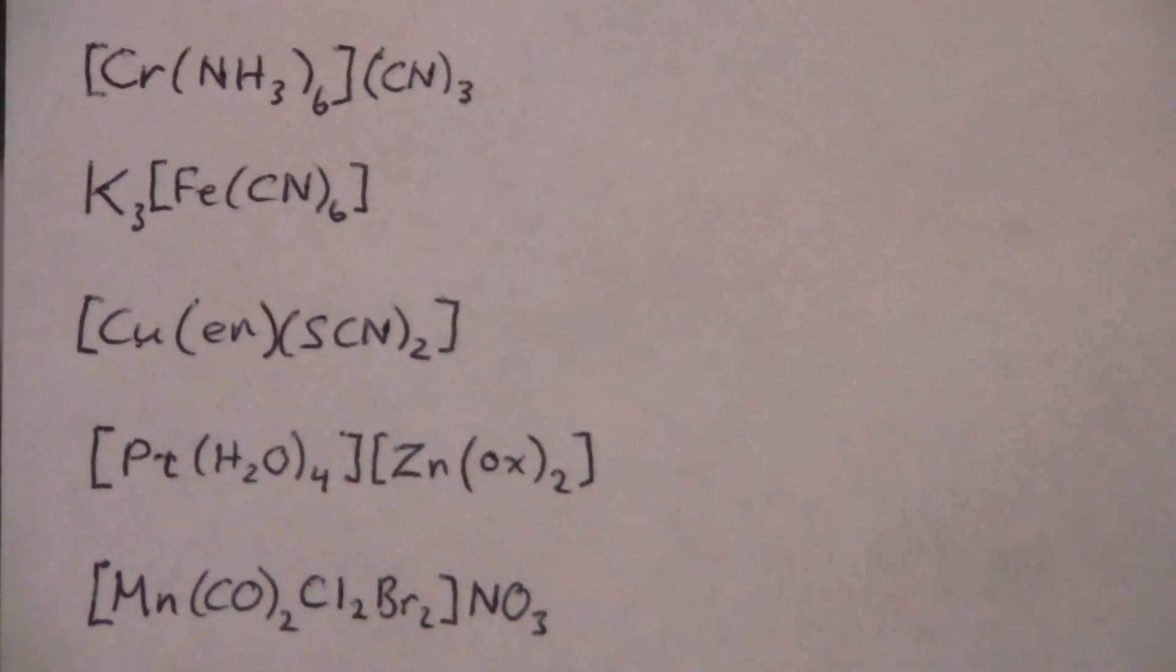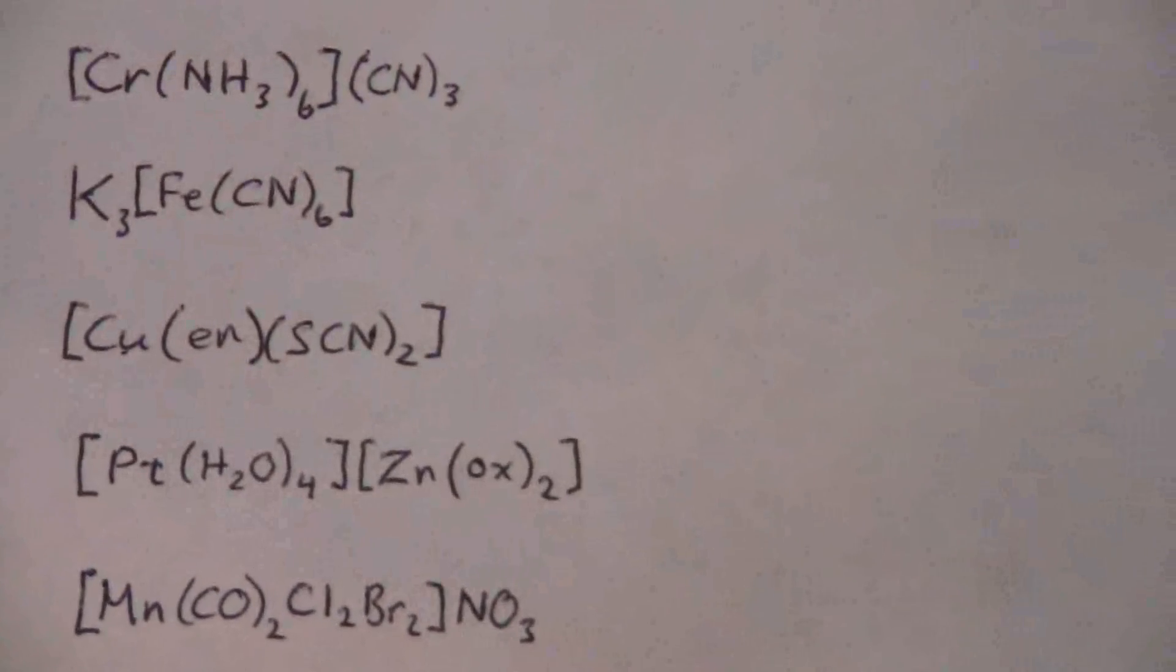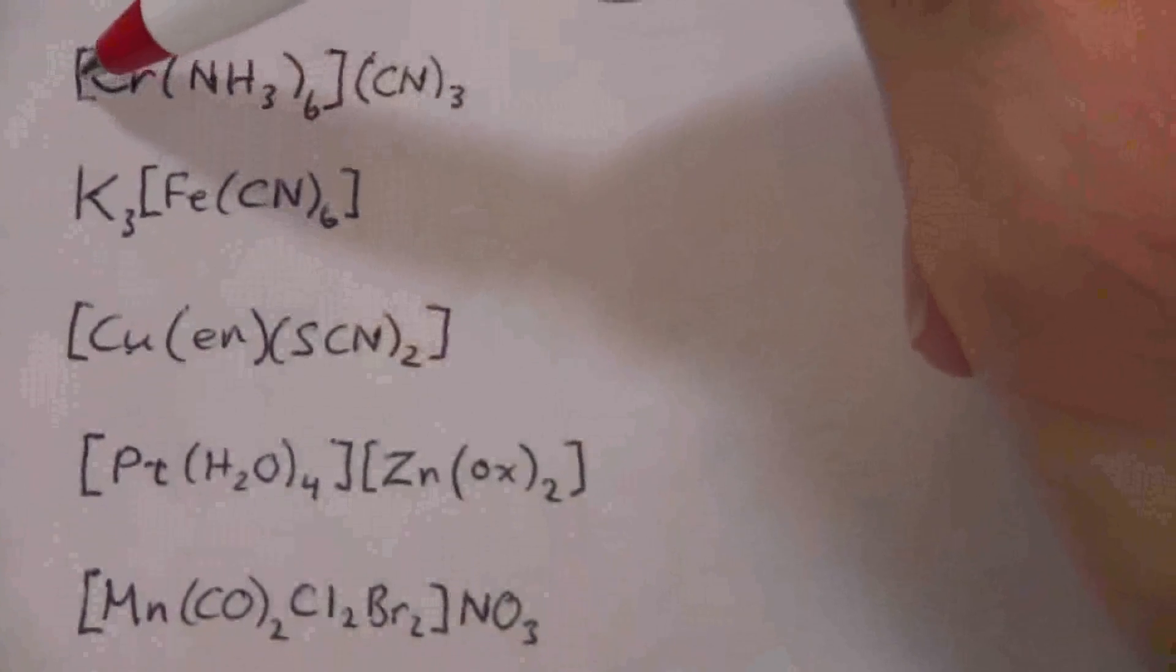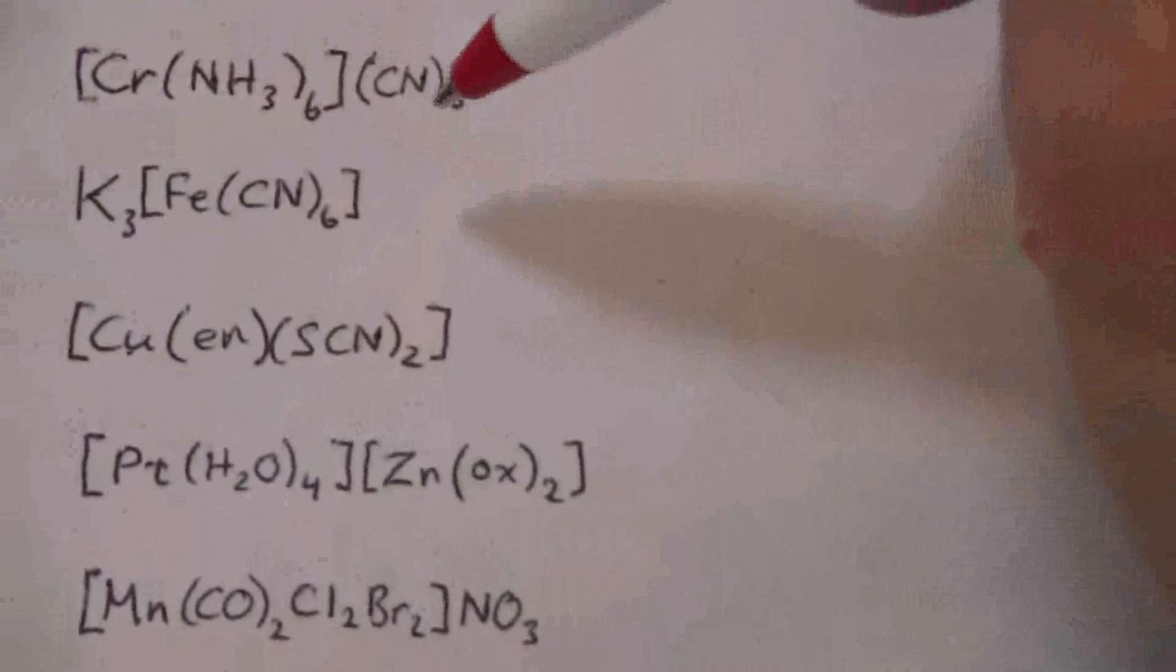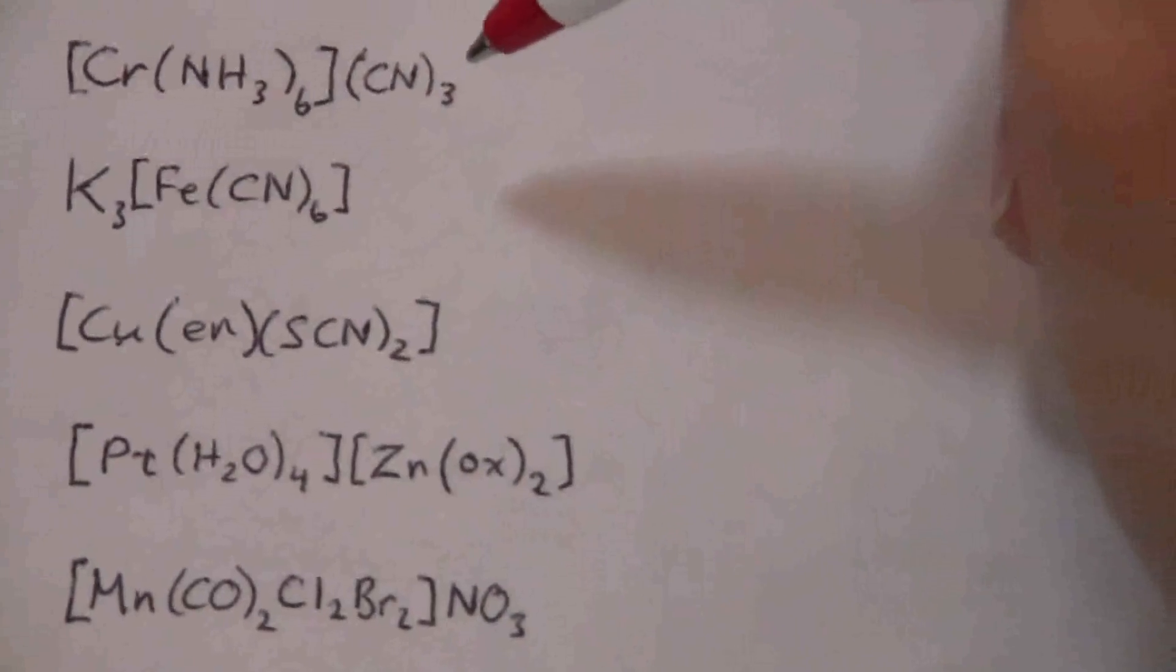All right, we're going to practice naming of some coordination compounds. The first one here we have the coordination complex as the cation and then we have the cyanide ion for the anion.